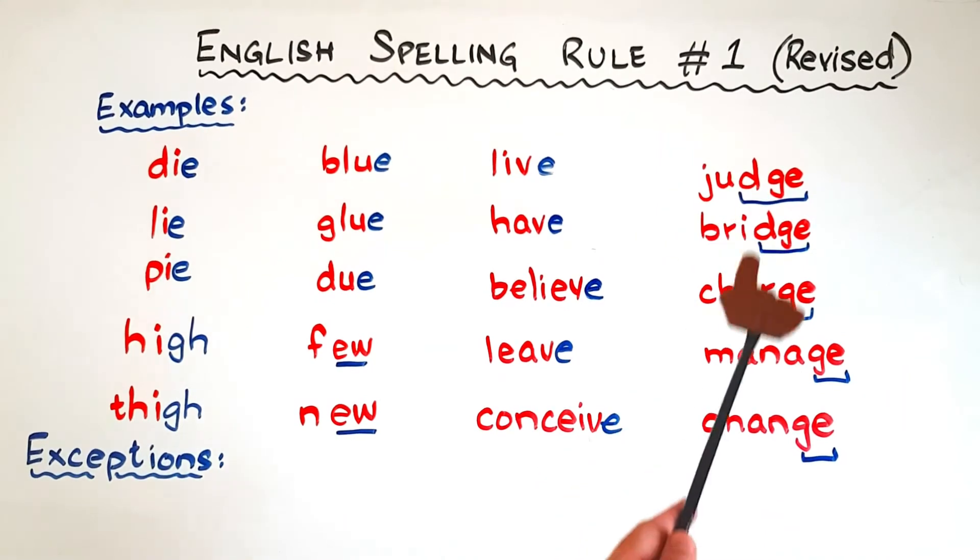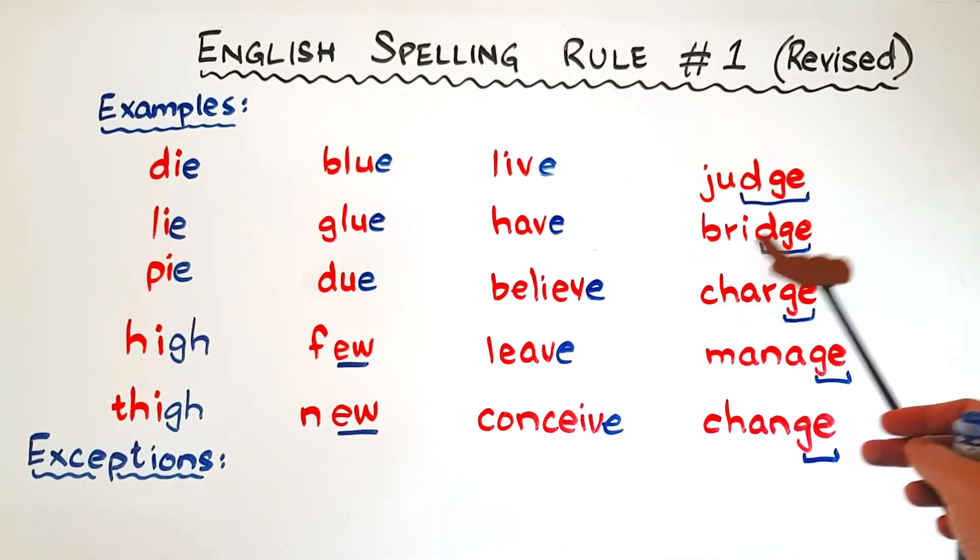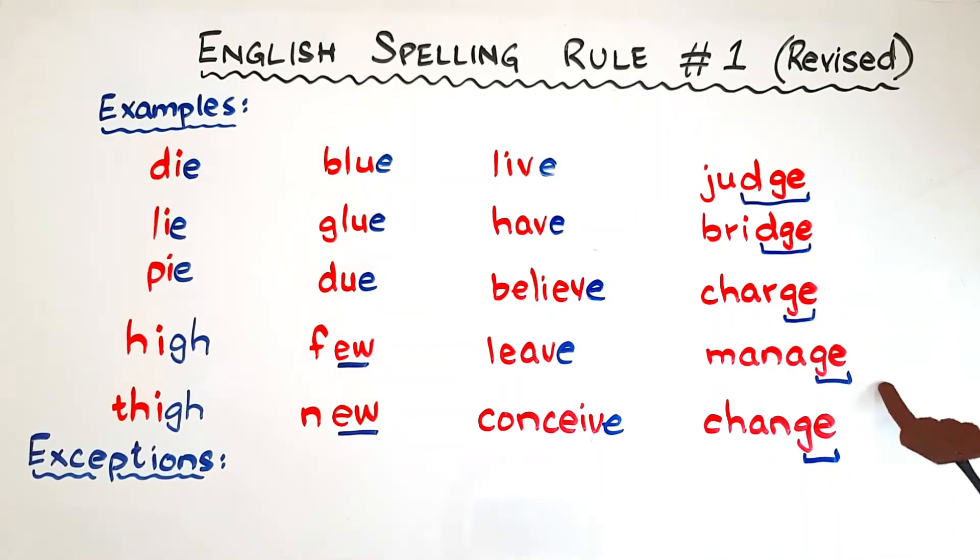The last letter sound is J. English words don't end in J. So the word is judge, bridge, charge, manage, change. J, J, J, J. You heard the sound, right? So how we are writing?